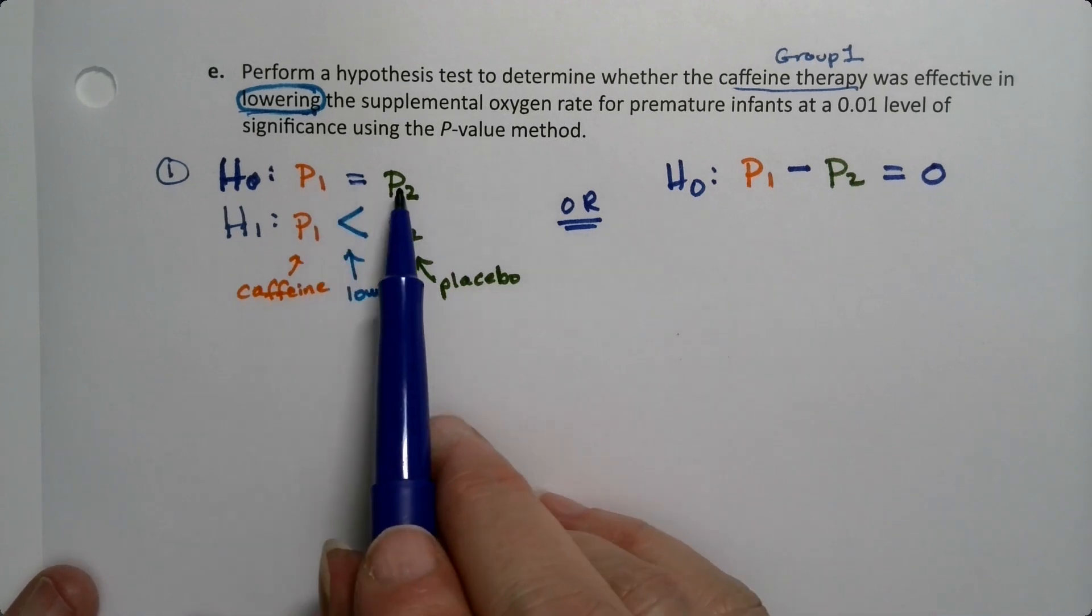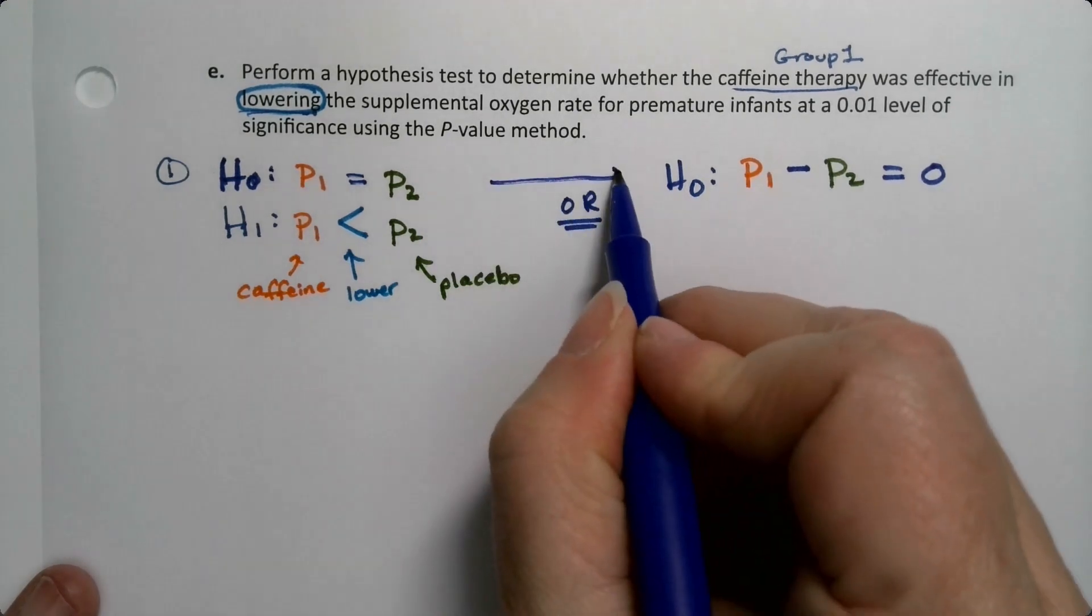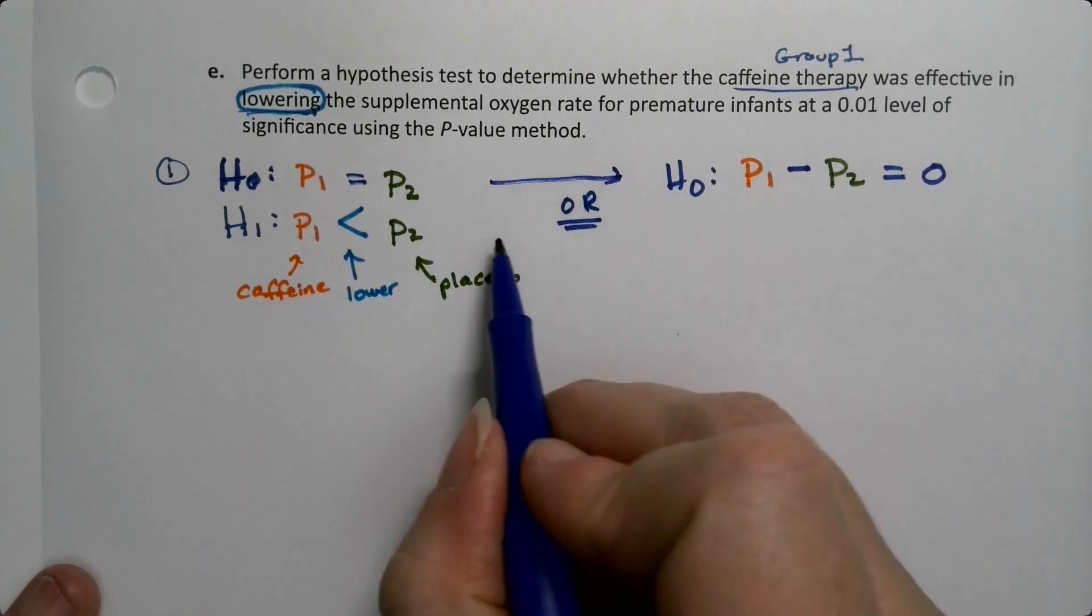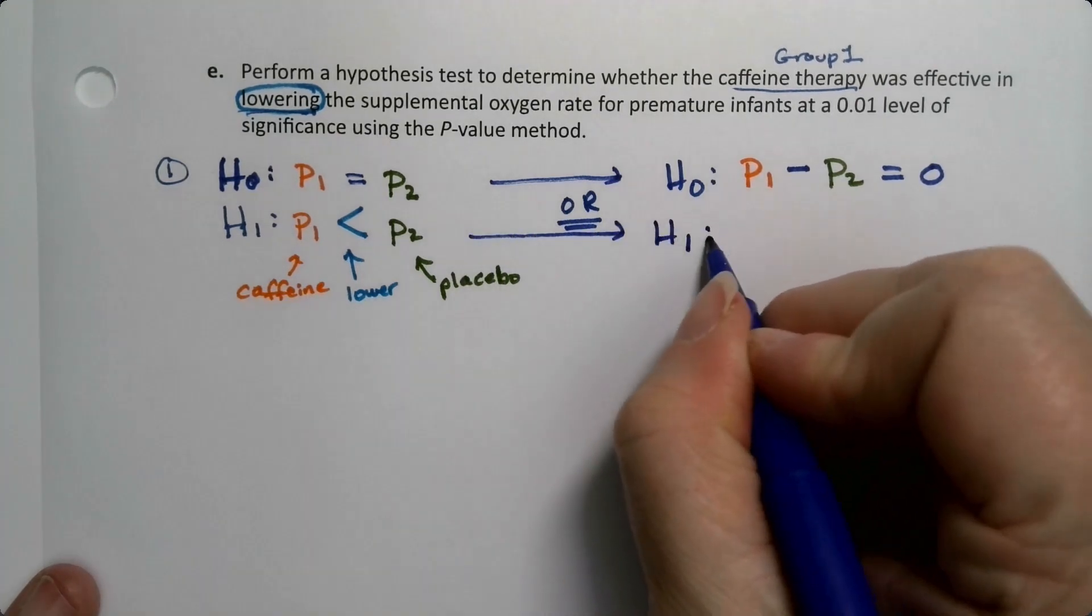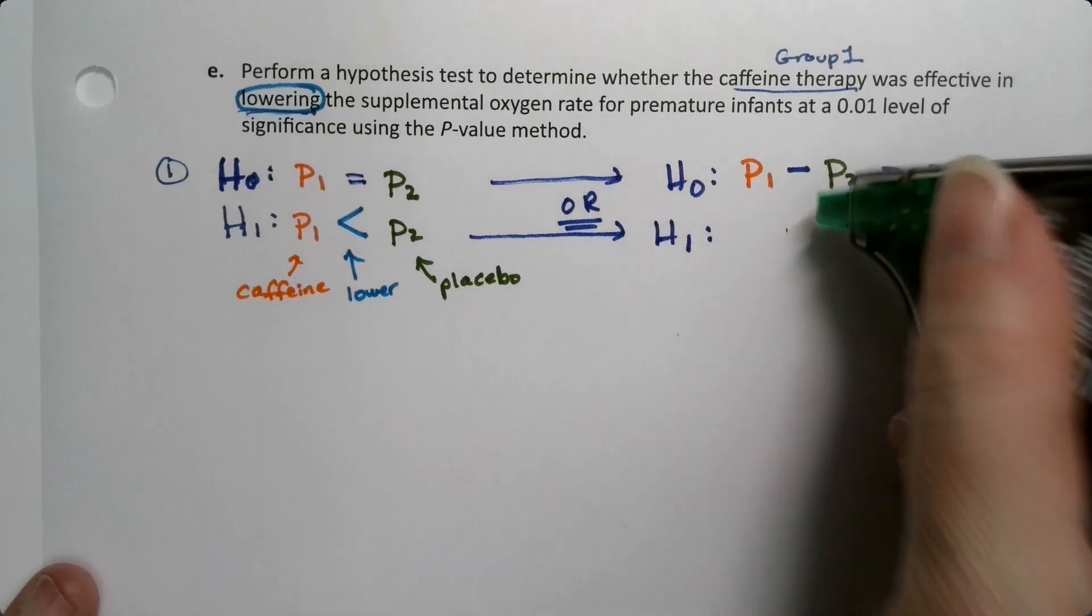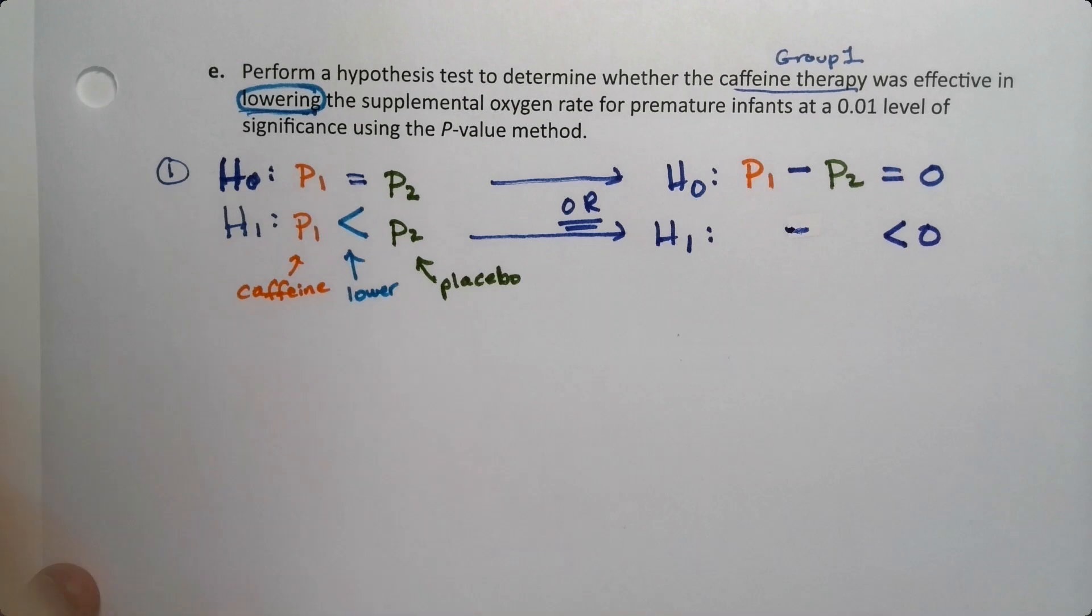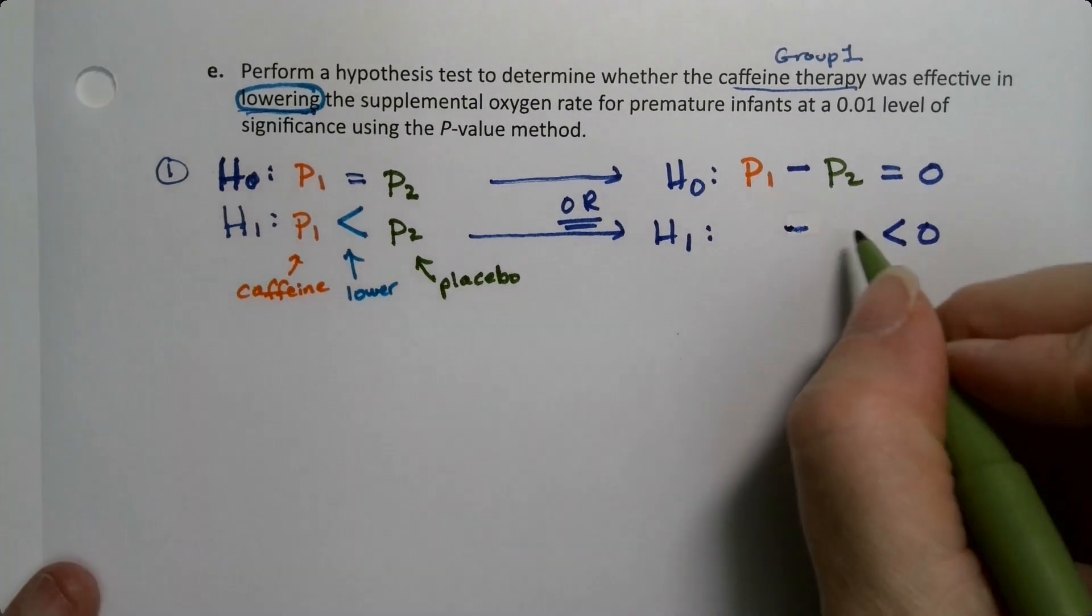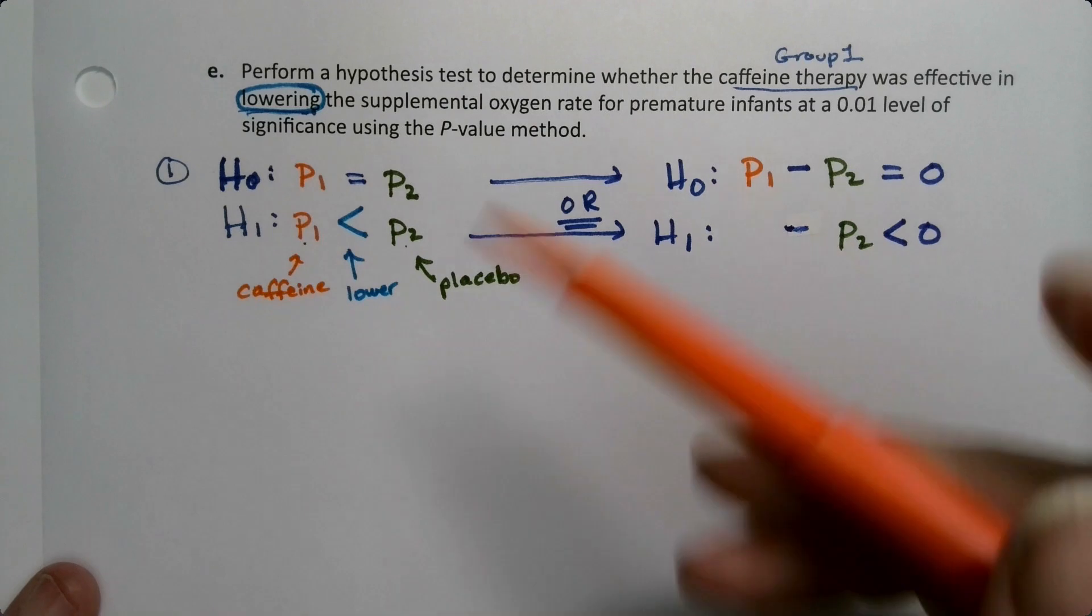So p1 equals p2 or p1 minus p2 is equal to zero - same thing. These are the same. And then the alternative would be H1: p1 minus p2, because we're going to subtract again, is less than zero. So we're subtracting p2 from both sides and we would end up with p1 minus p2 over here is less than zero.